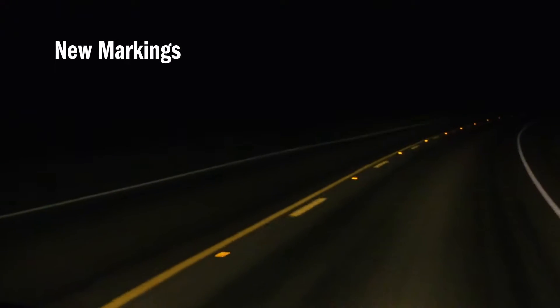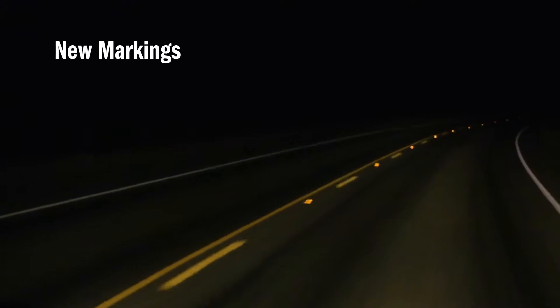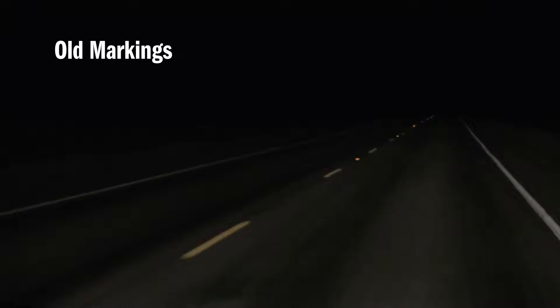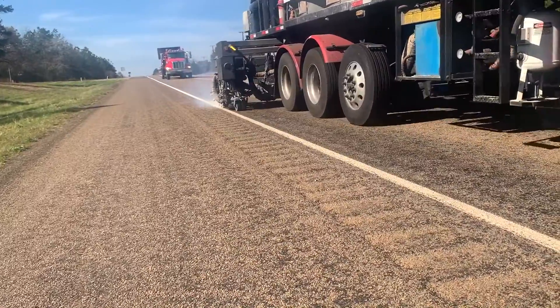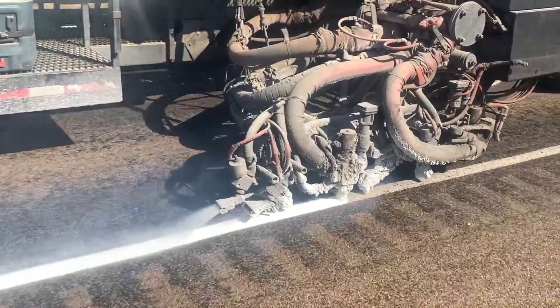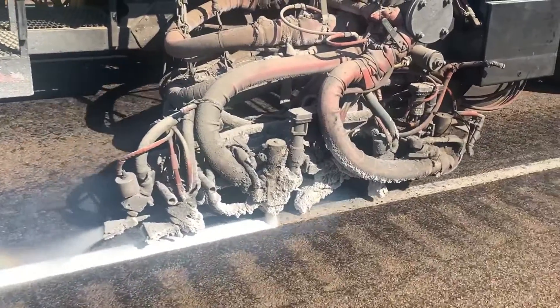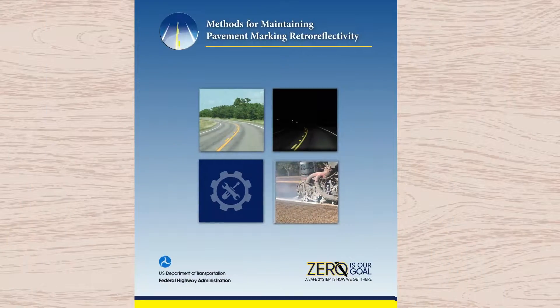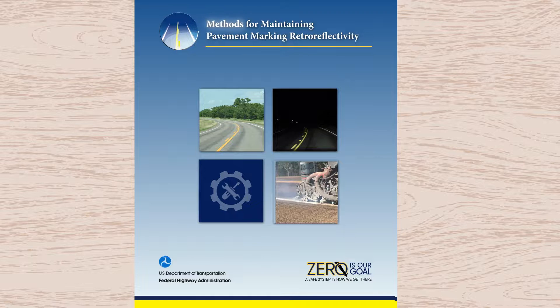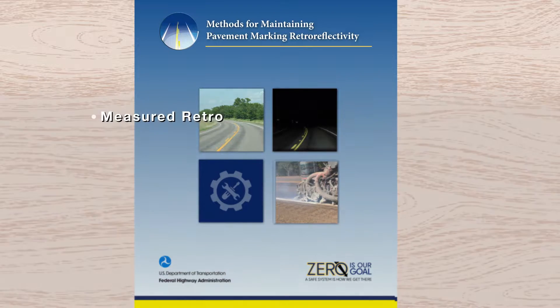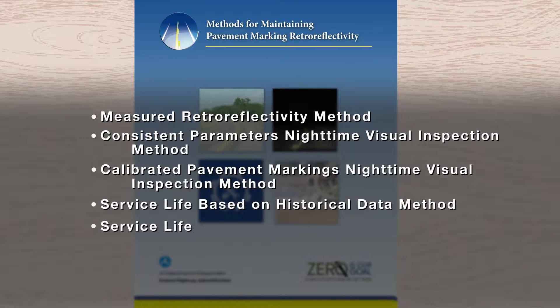While pavement marking retro-reflectivity has been required for several decades, this final rule establishes a requirement to implement and continue using a maintenance method to replace longitudinal markings before they fall below minimum retro-reflectivity levels. As part of this rulemaking, FHWA developed a publication titled Methods for Maintaining Pavement Marking Retro-reflectivity. The MUTCD recommends that agencies use one or more of the methods described in that publication to implement these provisions.